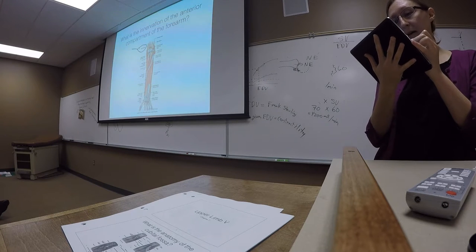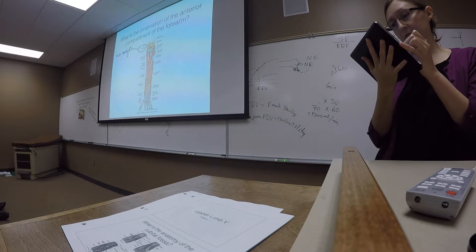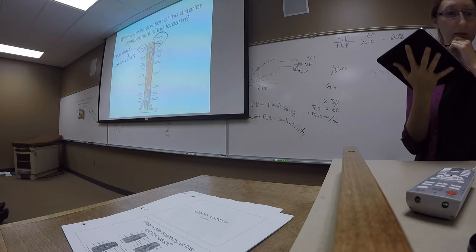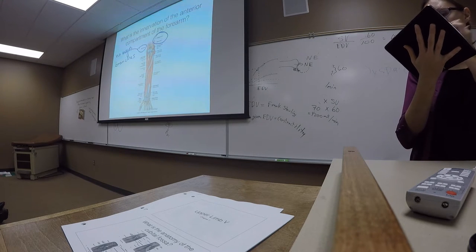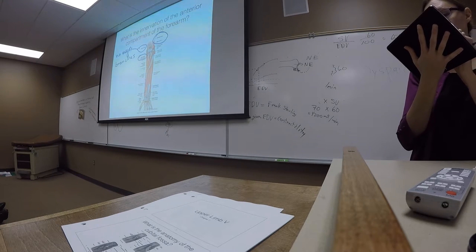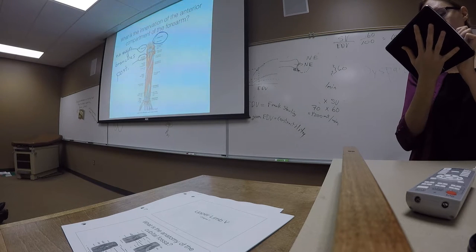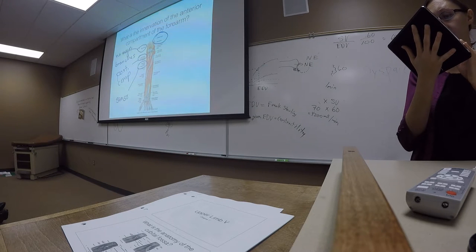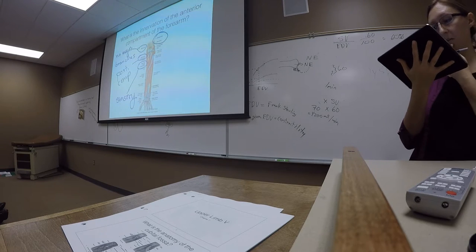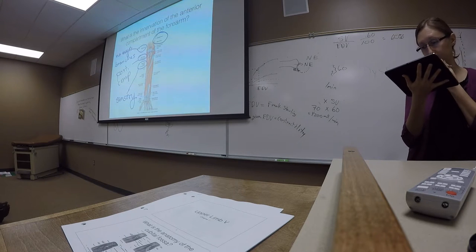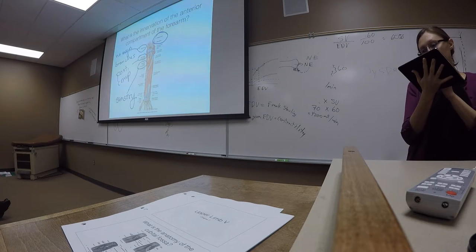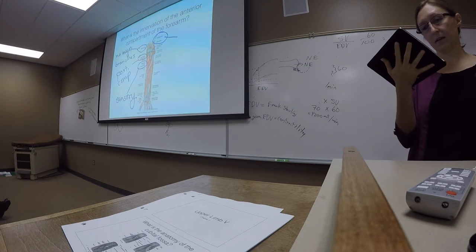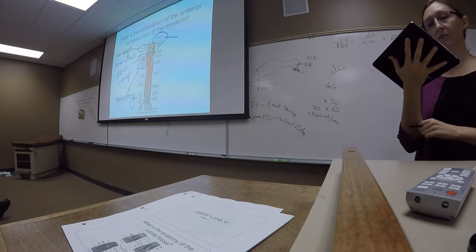For innervation of the forearm, the radial nerve is basically passing through with no major branches in the anterior compartment. The deep branch of the radial nerve moves posteriorly to the posterior compartment, and the superficial branch of the radial nerve is entirely sensory. Most of our innervation comes from the median and ulnar nerves. The median nerve innervates predominantly the more lateral structures, while the more medial structures are innervated by the ulnar nerve.